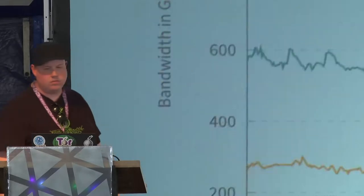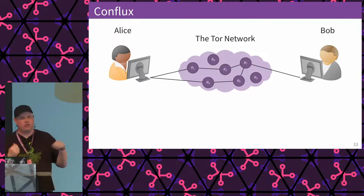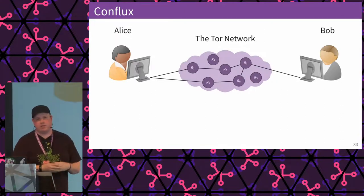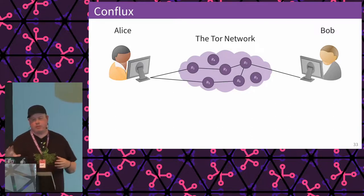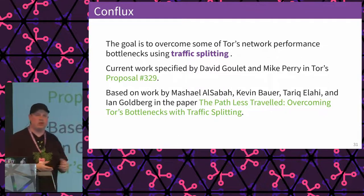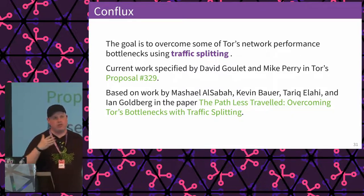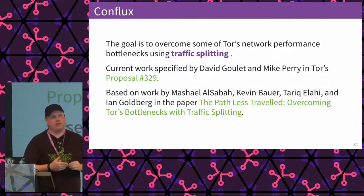Q: Does Conflux, the multipath feature, have any security implications for correlation or timing attacks? A: Absolutely — everything we modify needs pretty deep analysis on correlation factors. There are all the papers about choosing guards, and we have a new system called Vanguards that is also implicated here. The paper 'The Path Less Traveled: Overcoming Tor Bottlenecks with Traffic Splitting' has some of that analysis, and we'll probably discover more as we engineer it. Every time we modify anything related to incoming and outgoing flows, it has to have deep analysis done.